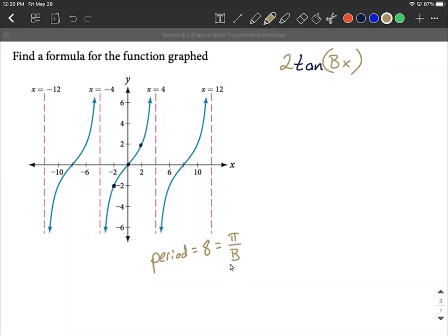Let's solve this equation for b. To solve, I'm going to get b out of the denominator, so multiply both sides by b. So we have 8b equals pi. To get b by itself, we divide by 8. So that gives us b equals pi over 8.